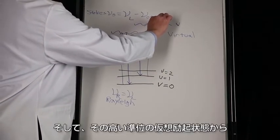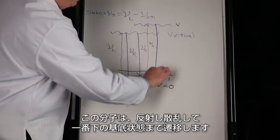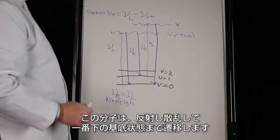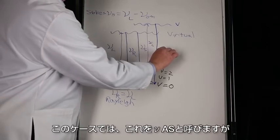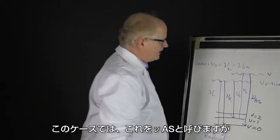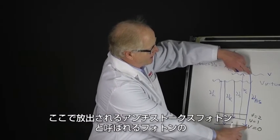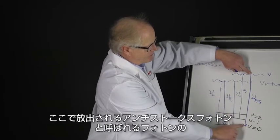And from that higher virtual state, the molecule can then scatter all the way back to the ground state. Notice in this case, and we'll call this νAS, that this photon right here, which is called an anti-Stokes photon...